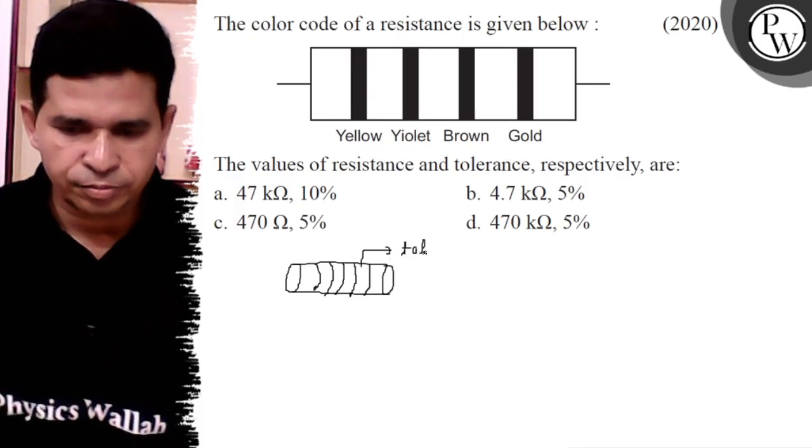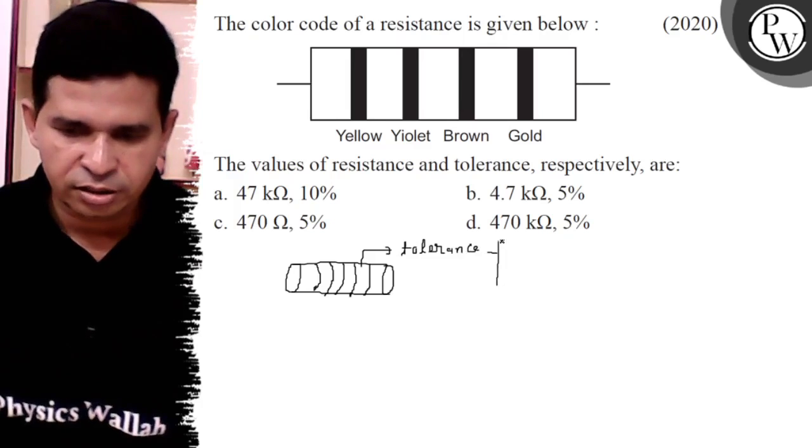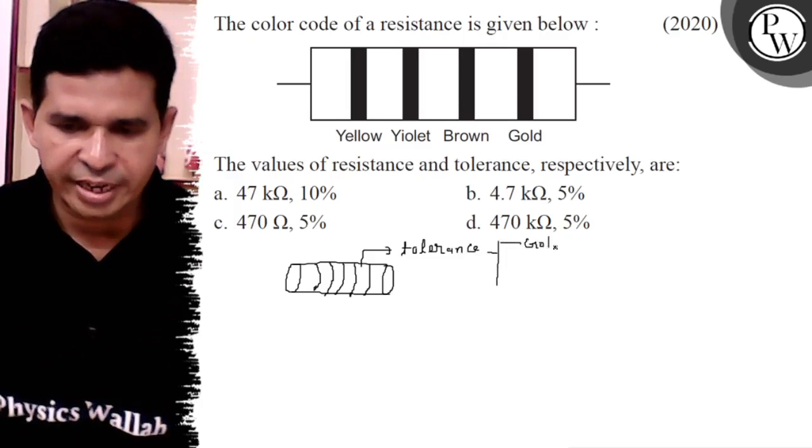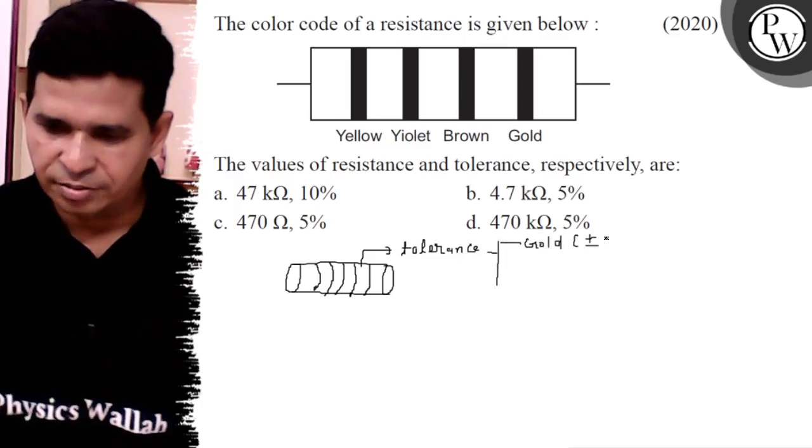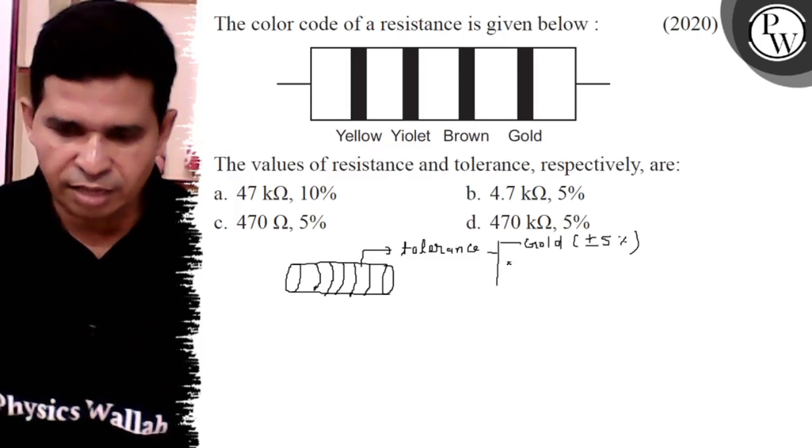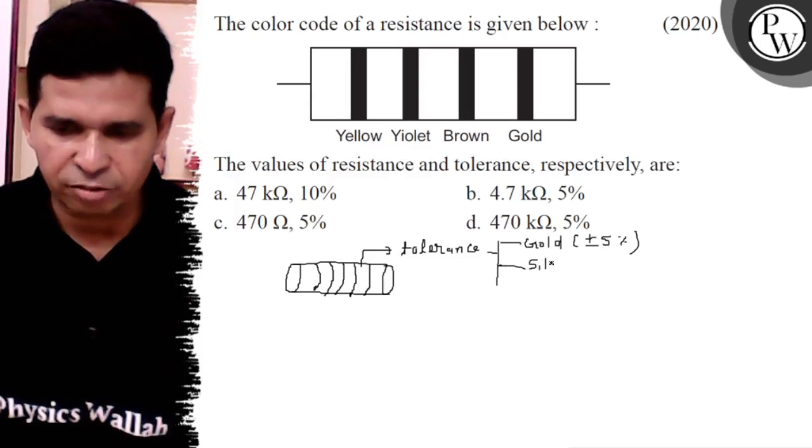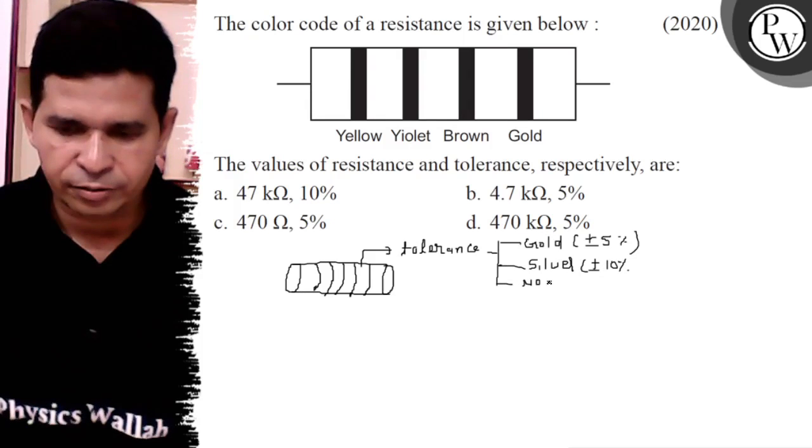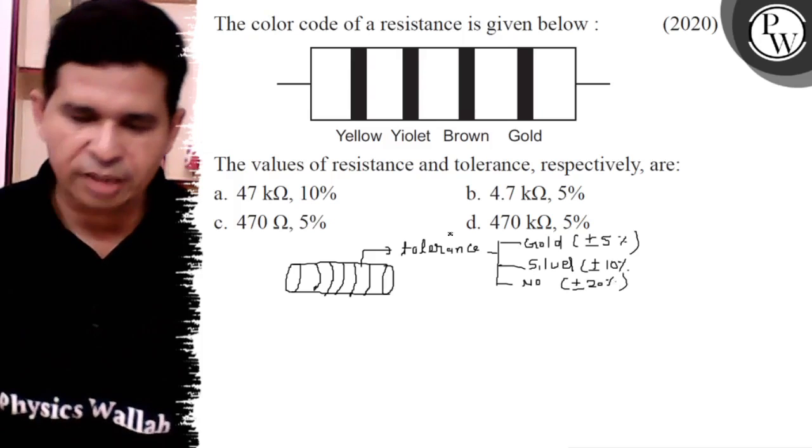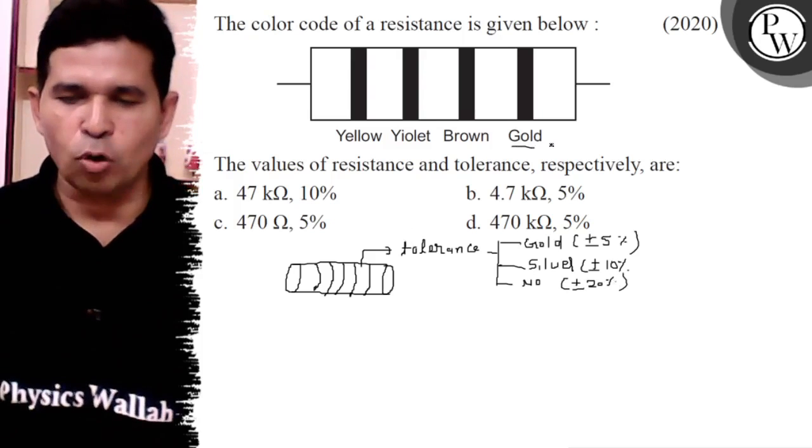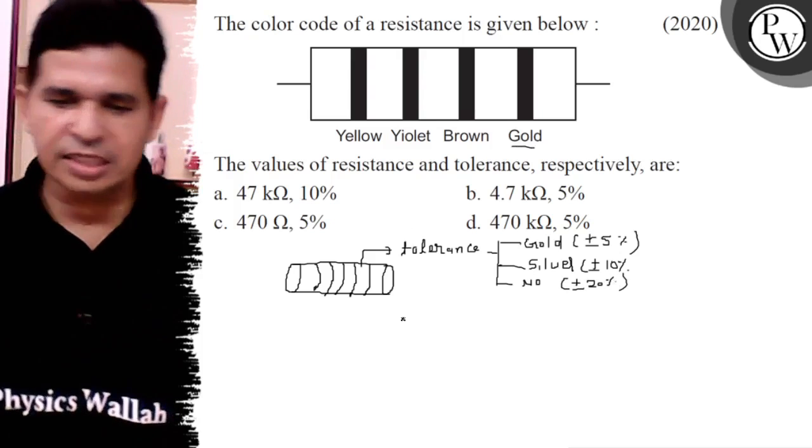Tolerance have only three colors. Gold, it have plus minus five percent tolerance. Silver, definitely it have the ten percent, and no color having the plus minus twenty percent. So here the fourth ring have the gold, so plus minus five percent is the tolerance.